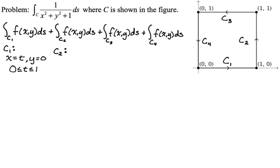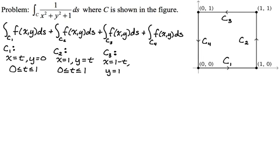For c2, x is always equal to 1, and y goes from 0 to 1, so delta y is 1, giving y equals t. Again, bounds are 0 to 1. For c3, x starts at 1 and ends at 0, so delta x is negative 1, giving x equals 1 minus t. And y is just always 1 on that part. Bounds are 0 to 1 again.